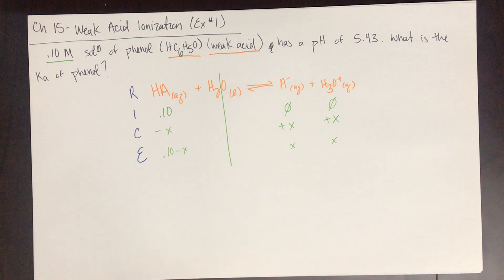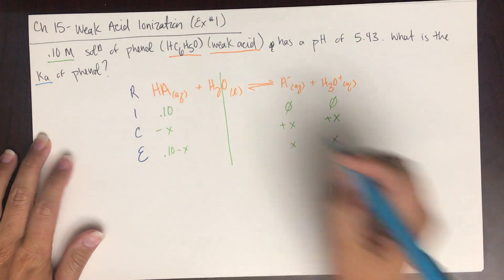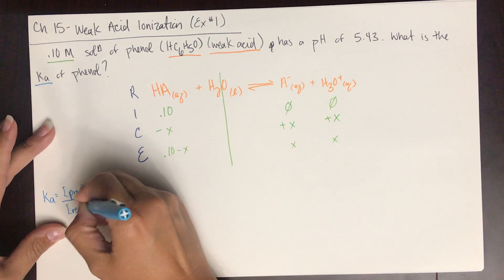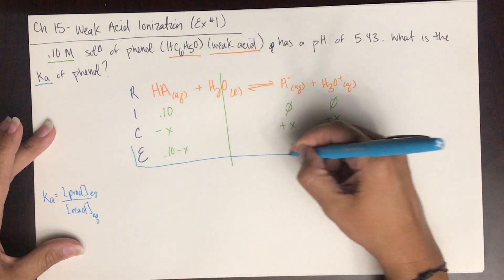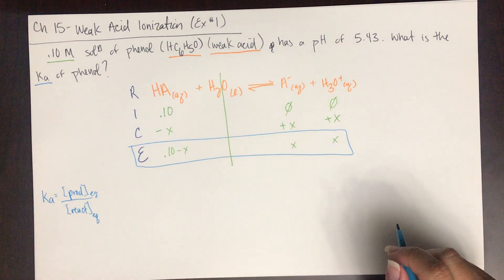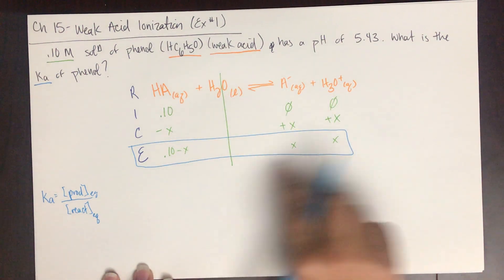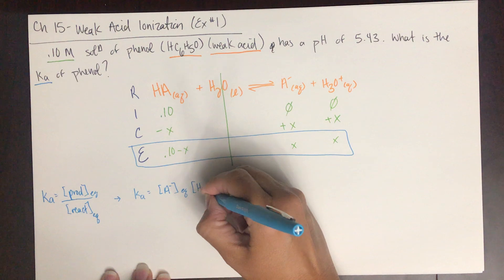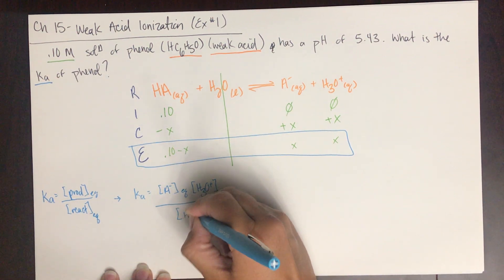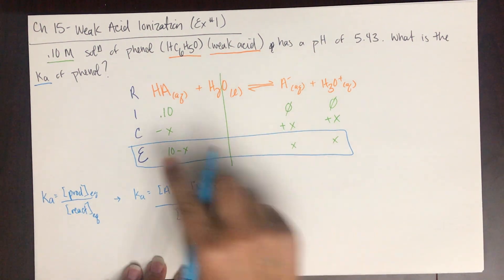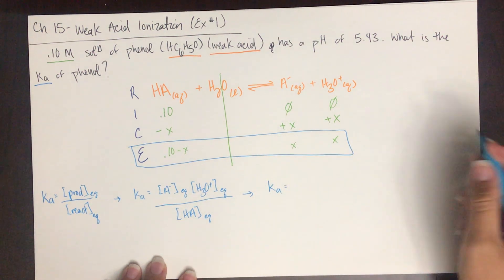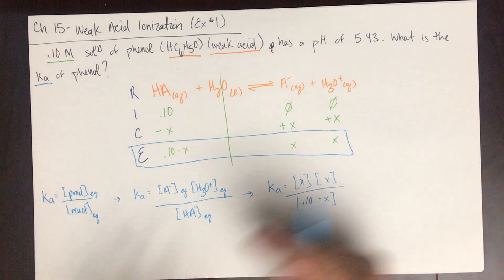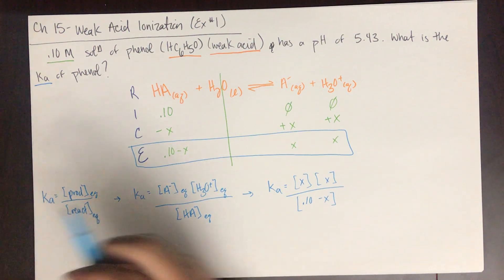We're solving for Ka, which is the concentration of products over the concentration of reactants at equilibrium — we use the equilibrium row. So Ka equals the concentration of A⁻ times the concentration of H₃O⁺ over the concentration of HA. Plugging in the equilibrium row: Ka equals x times x over 0.10 minus x.